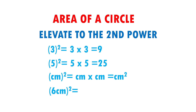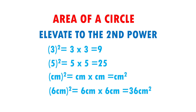First, I am going to multiply the numbers. 6 times 6 gives me 36, and centimeter times centimeter gives me square centimeters. Therefore, my final result is 36 centimeters squared.